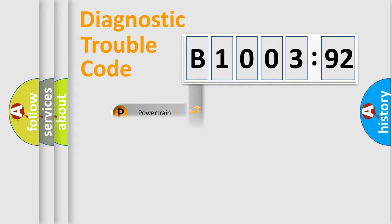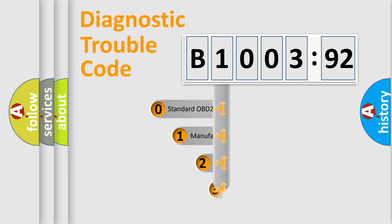Powertrain, Body, Chassis, and Network. This distribution is defined in the first character code.